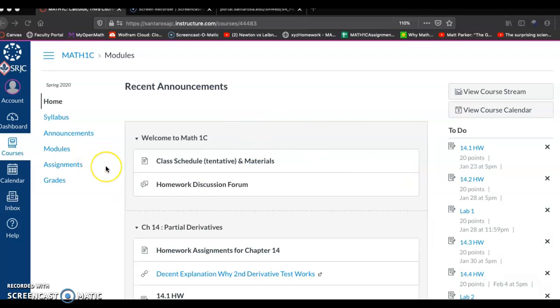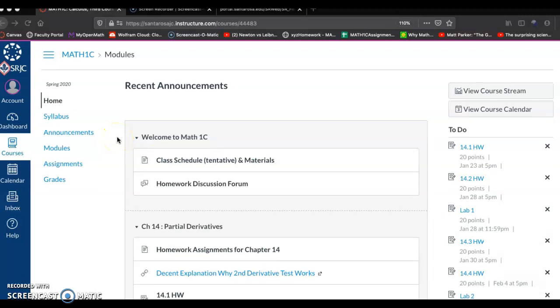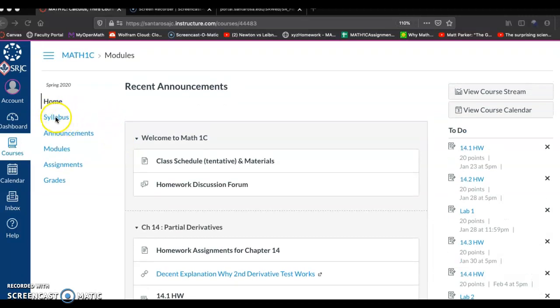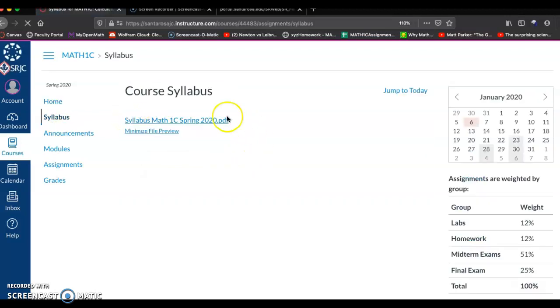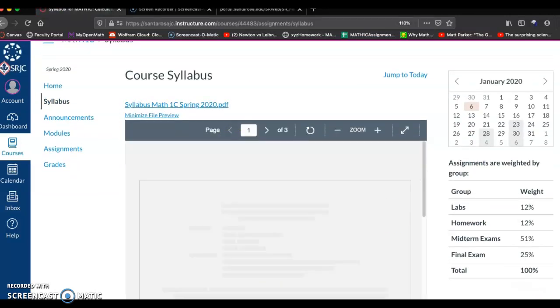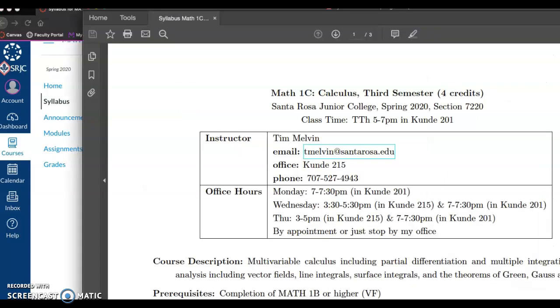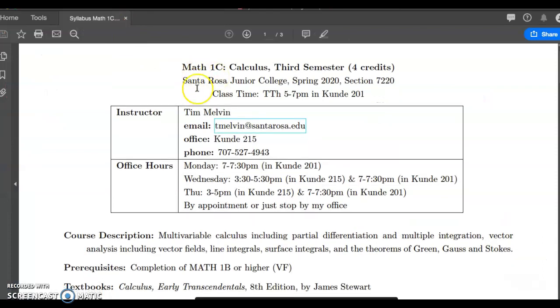As you can see here, I've got the Canvas page open. I try to organize everything through Canvas - class schedule, homework assignments, any worksheets or documents we do in class, I'll post here on Canvas. So the first thing I want to look at here is there's the Syllabus tab. I'm not going to go over the entire syllabus. You have a PDF copy of this right here. Alright, open that up. Let's center this. Alright, I've got the Syllabus.